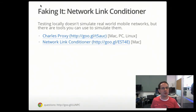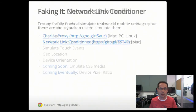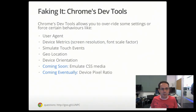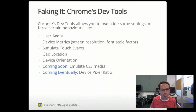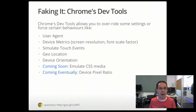Faking it with the Network Link Conditioner is one way to understand how your app is going to work for users who may not be connecting with the same great bandwidth you have. One of the next things I want to talk about is some of the developer tools within Chrome, because Chrome offers a lot of great tools to help you test your web application. I call it faking it because it provides an emulation experience — it's not going to be a true experience because you're not running on the same hardware, but you can get a pretty good sense of how things are working.